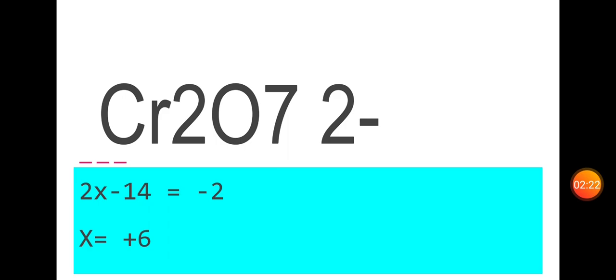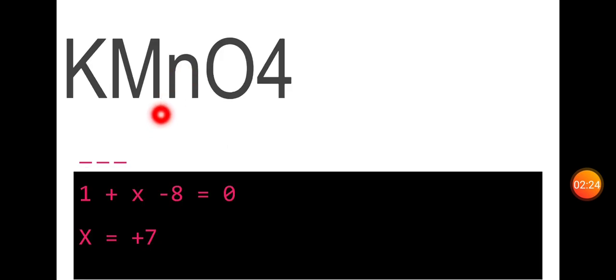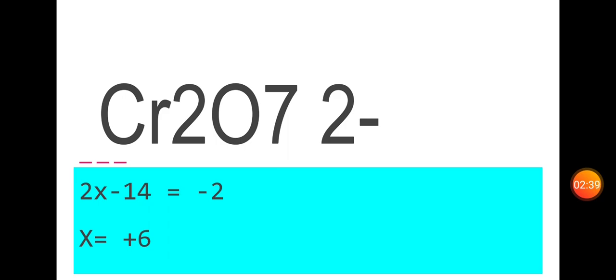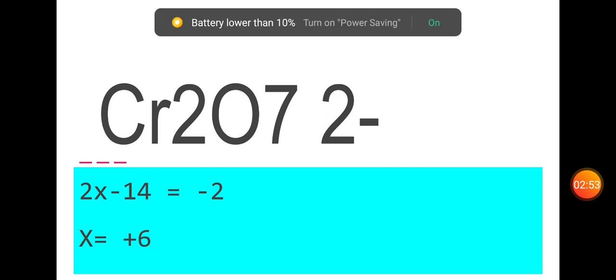Now for KMnO4: potassium is plus 1, oxygen is minus 2, so 1 plus x minus 8 equals 0, giving x equals plus 7. For Cr2O7 2- as a charged ion: 2x plus 1 minus 8 equals minus 2, so 2x minus 14 equals minus 2, giving x equals plus 6.